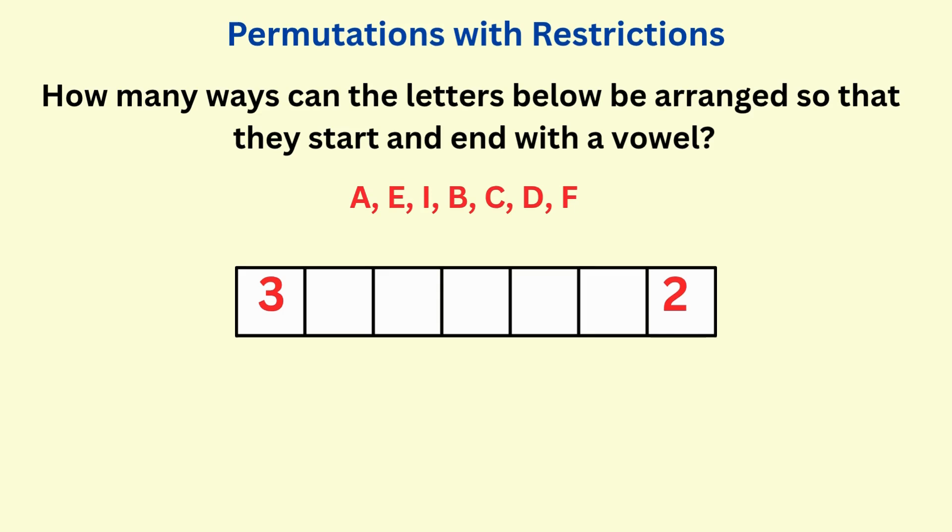Once we've placed the vowels at both ends, that leaves us with five letters to fill the other spaces in the box. So, five choices for the next empty space. So now, three letters are placed, leaving four choices.